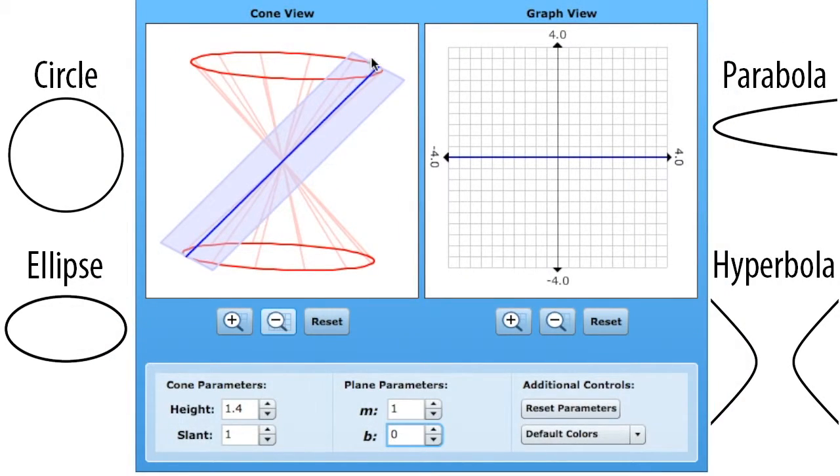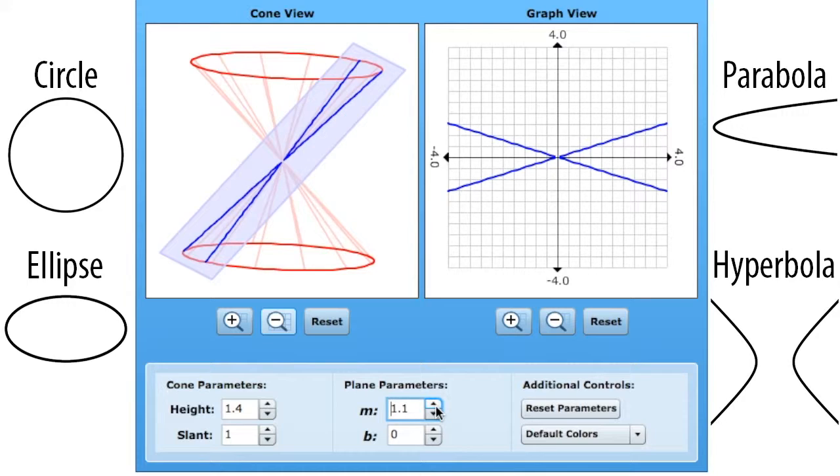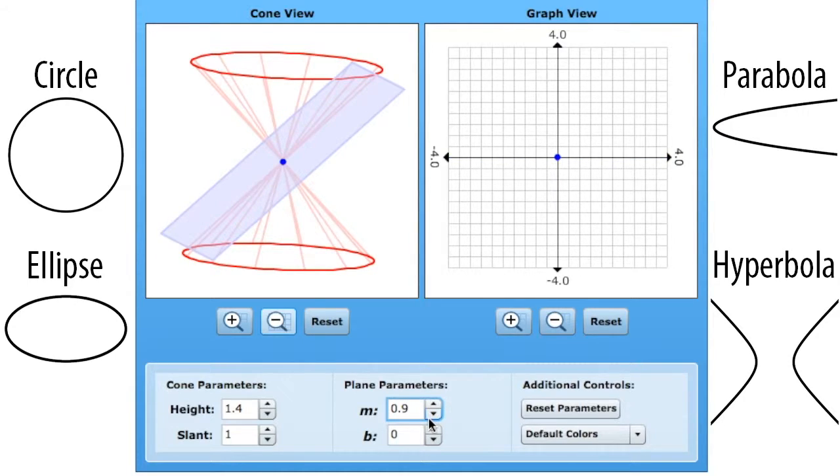When you move the b down to zero, you actually get a line, because it's crossing through the very edge of both of those cones. If you increase that slope, we actually get an X, because it's crossing directly through that middle. And if you decrease that, we just get a single point, because it's only passing through the cones at that one single point.